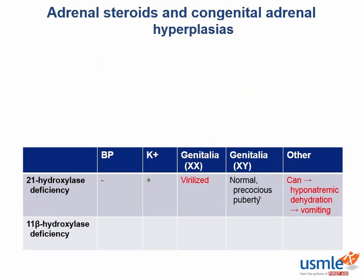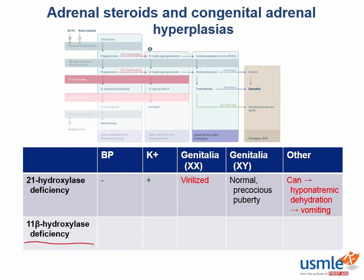Here's a summary of what goes on in 21-hydroxylase deficiency. Now pause the video and see if you can do the same for 11-beta-hydroxylase deficiency. The first two enzymes that divert the progesterones down the aldo and cortisol pathways are 21-hydroxylase and 11-beta-hydroxylase. So an 11-beta-hydroxylase deficiency simply shuts down production of aldosterone and cortisol just one step later. Sounds like it causes the same problems, right? Wrong!